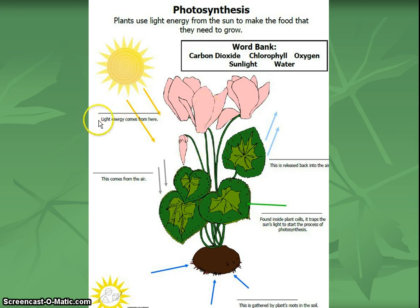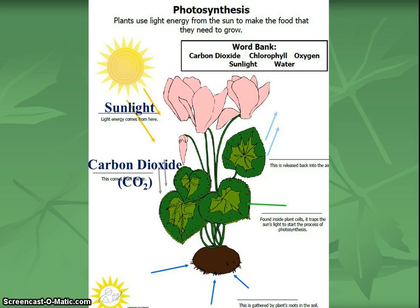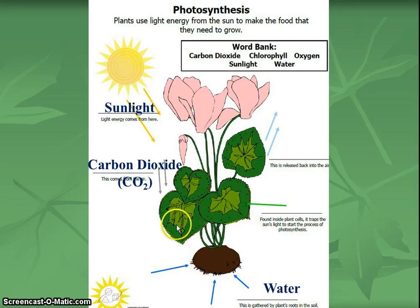Right here it says light energy comes from sunlight. So what goes into the process of photosynthesis? Sunlight. The next thing comes from the air, and that is carbon dioxide. Make sure we have arrows going towards our plant for sunlight and arrows going towards our plant for carbon dioxide. Our next input going towards our plant is water. All three of these — sunlight, carbon dioxide, and water — are all needed, which is why we have arrows going into the plant for photosynthesis.